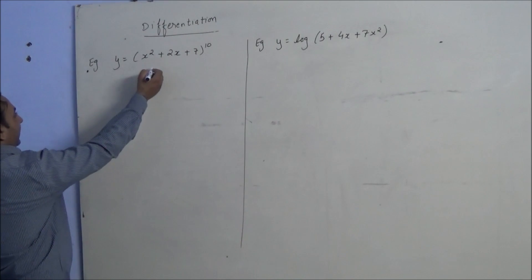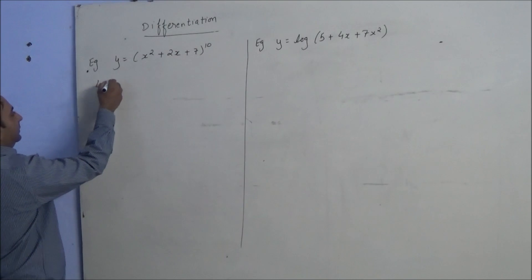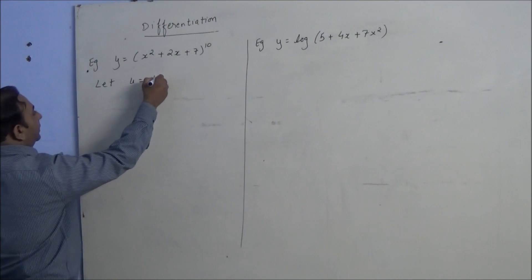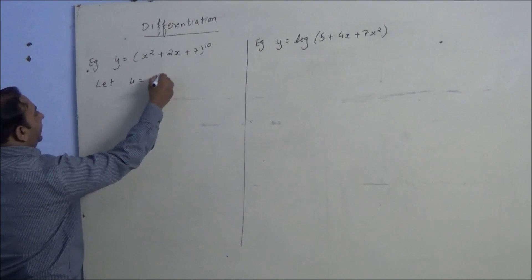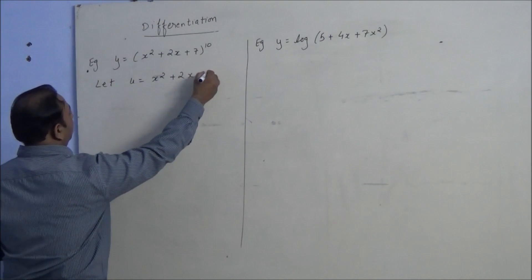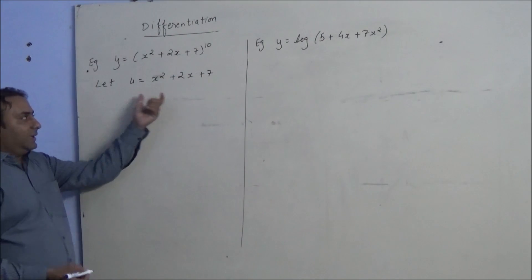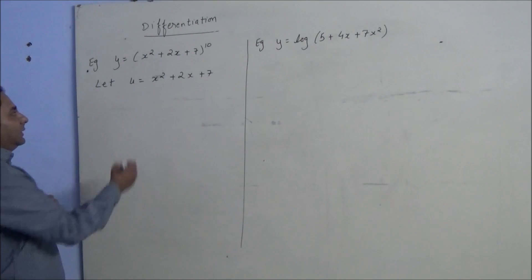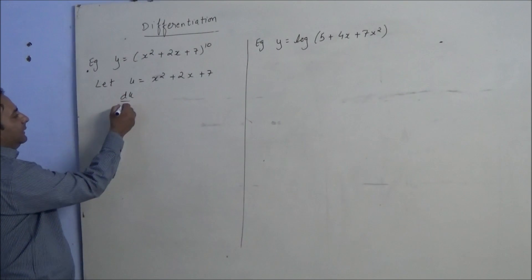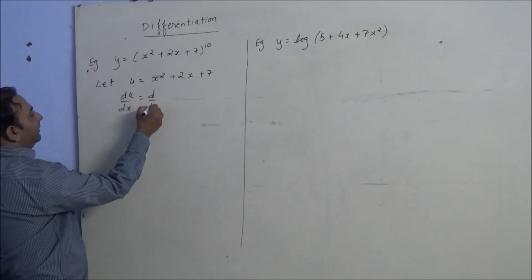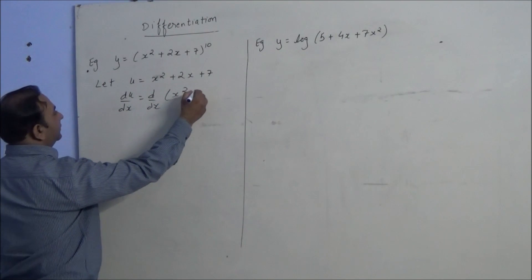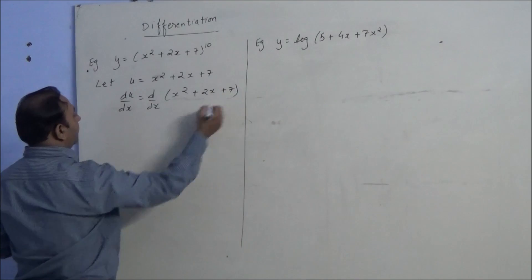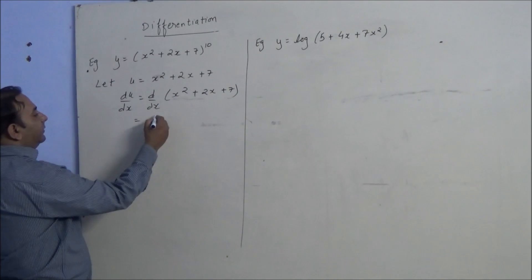We will take this bracket as u. Let u equals x squared plus 2x plus 7. We have taken this as u. Now we will find the derivative of this, that is du by dx, d by dx of this bracket. So for x squared it will be 2x.